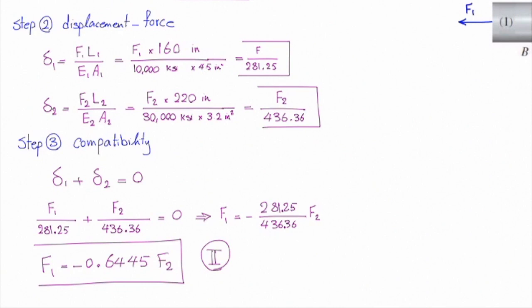This is the second equation that relates F1 and F2. Now we have two unknowns and two equations, so we can solve them for the internal forces. This is what we do in step four.